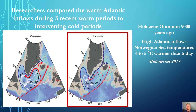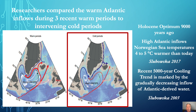Similar studies found that the warmth of the Holocene Optimum, about 9,000 years ago, coincided with strong Atlantic water inflows that raised subpolar ocean temperatures to 4 degrees above temperatures observed today. Similarly, during the most recent 5,000 years known as the Neoglacial, the gradual decrease in Atlantic inflows coincided with increasing sea ice, culminating in the Little Ice Age's greatest sea ice extent. Clearly, both short-term and long-term studies find the extent of Arctic sea ice is regulated by changes in the warm Atlantic inflows.